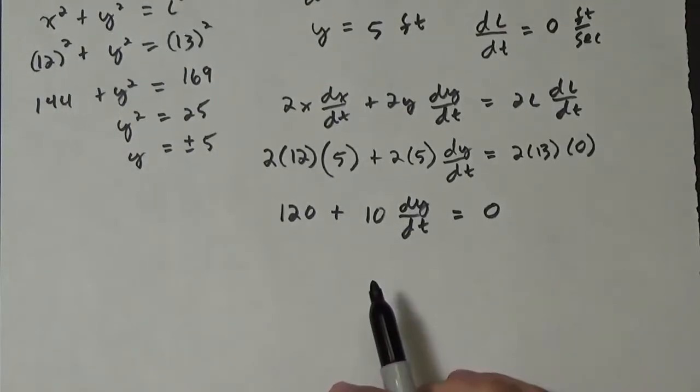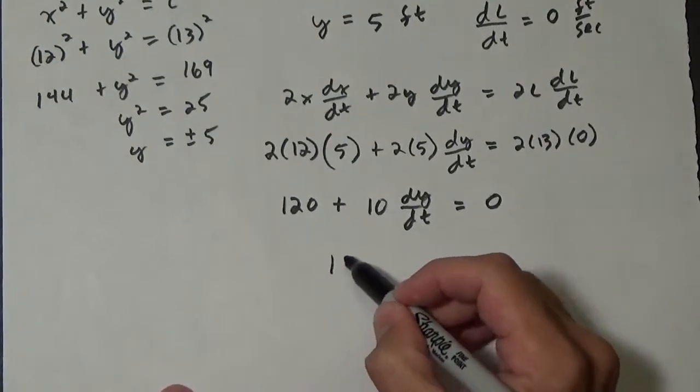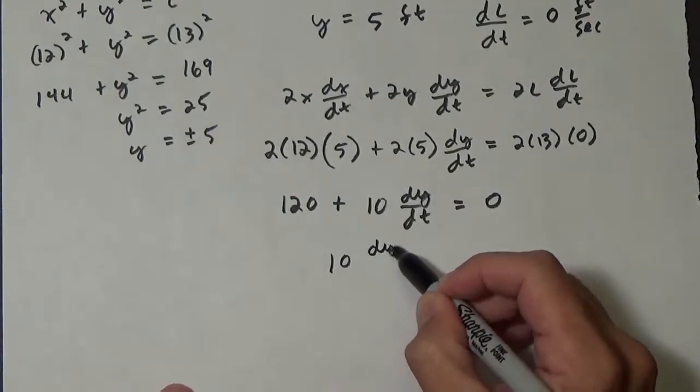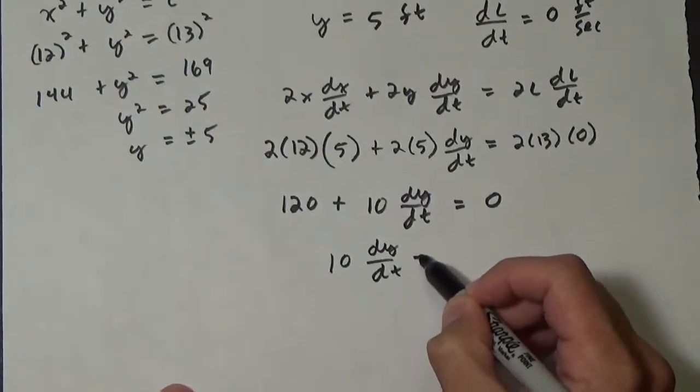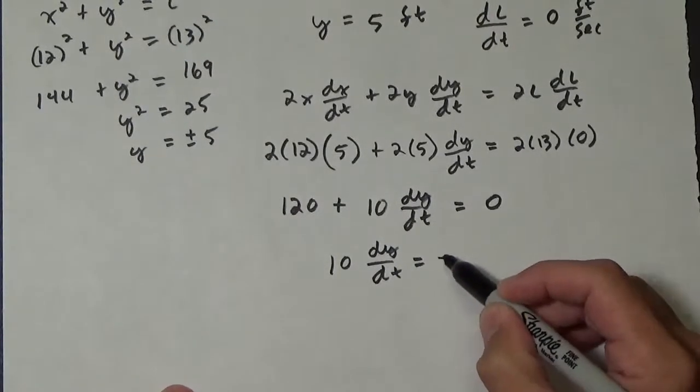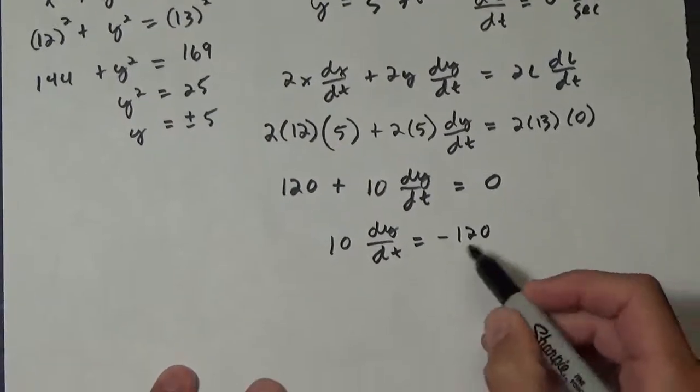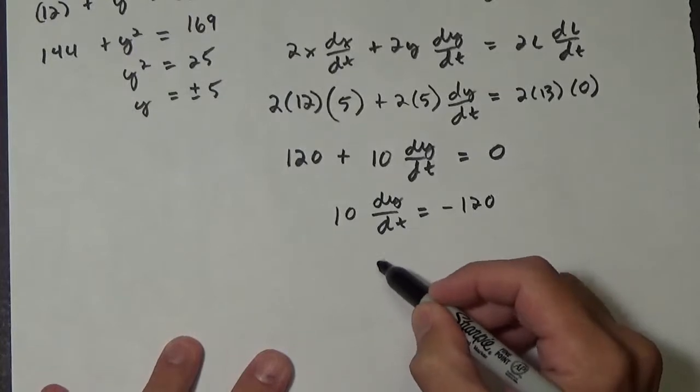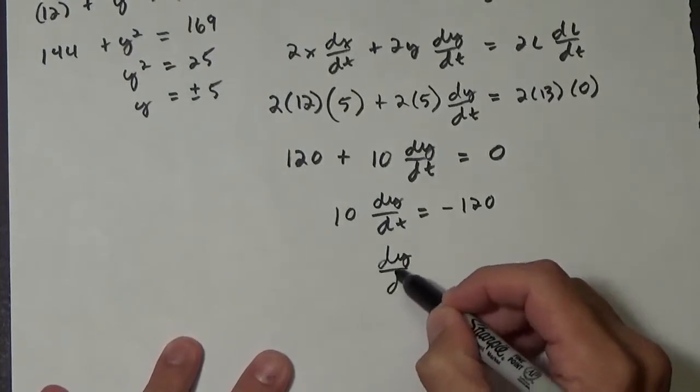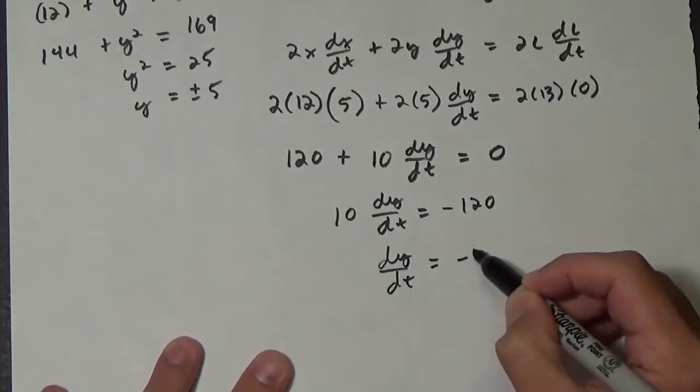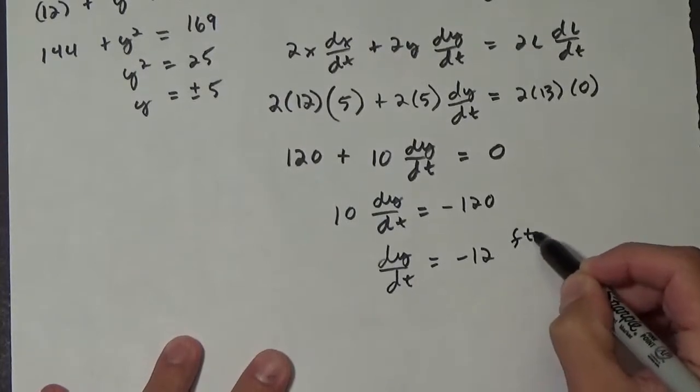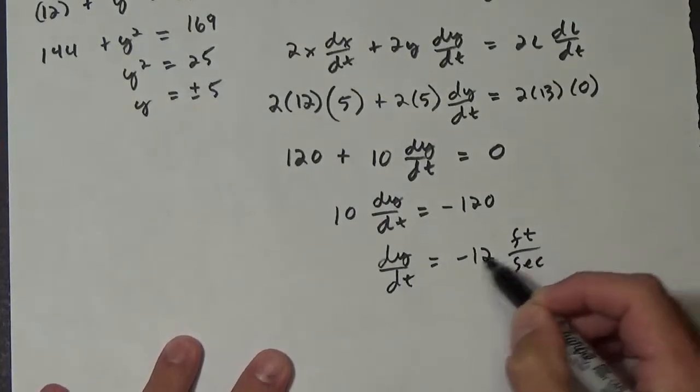So let's subtract the 120. So we have 10 dy/dt equals negative 120. So then that means dy/dt equals negative 12 feet per second.